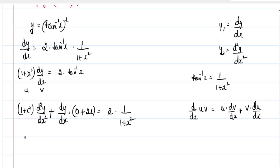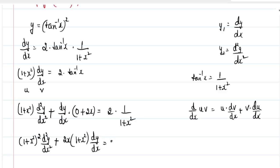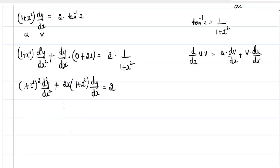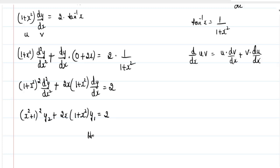Now we will take this term to the LHS. We get 1 plus x square into 1 plus x square, which is 1 plus x square whole square, into d square y by dx square, plus 2x into 1 plus x square into dy by dx, equals 2. Since dy by dx is y1 and d square y by dx square is y2, we can write this as x square plus 1 whole square, y2, plus 2x into 1 plus x square, y1, equals 2. Hence proved.